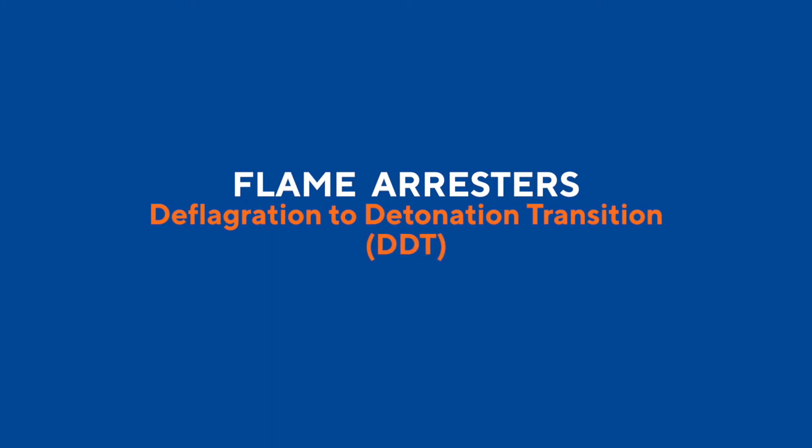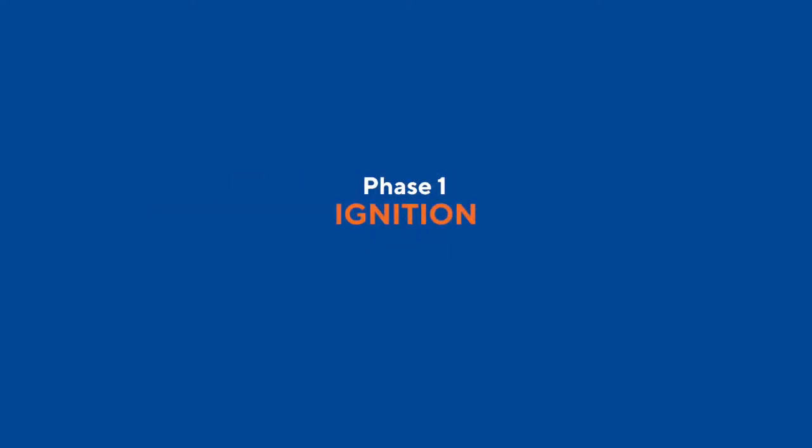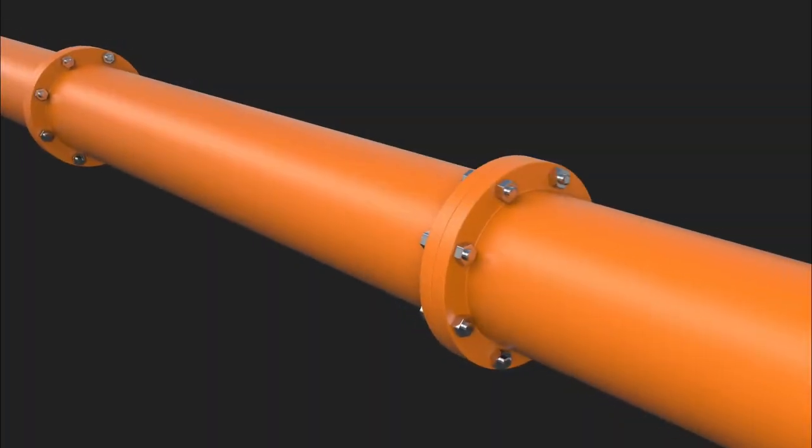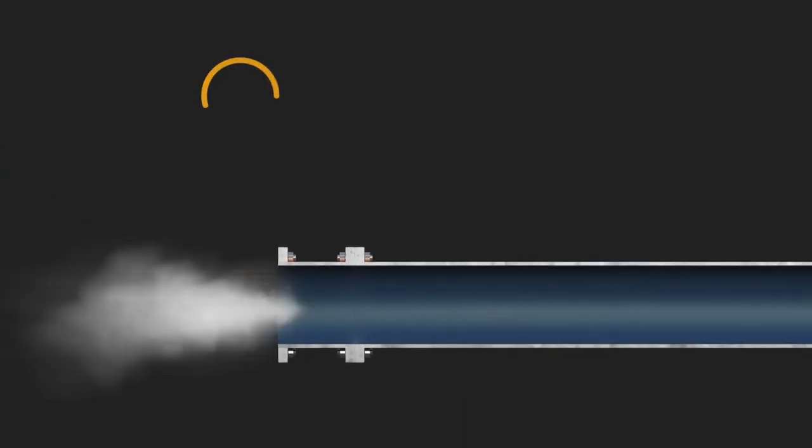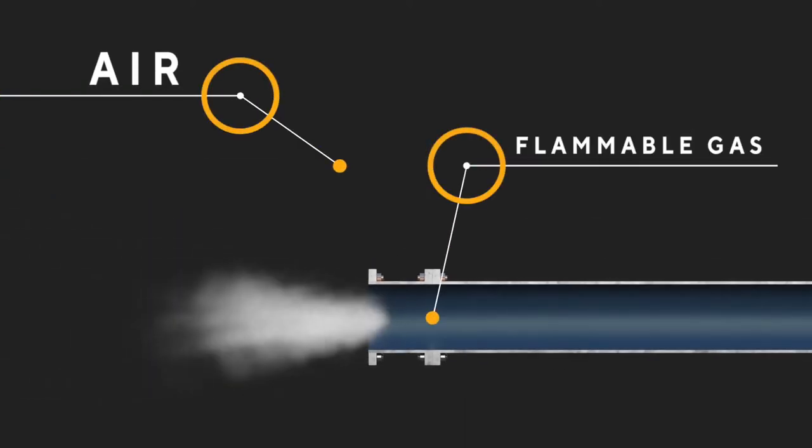Flame arresters for the deflagration to detonation transition. Phase one: ignition. Whenever a flammable gas or vapor is mixed with air, there is the potential for an explosion. Accidental ignition of the flammable mixture will initiate a flame.